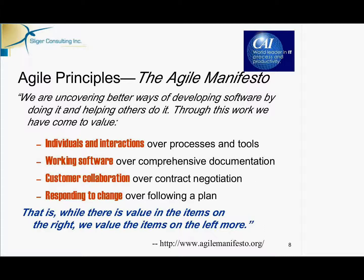They laid out their value system in this manifesto and in an associated set of principles. The manifesto is really just a common sense approach to the creation and delivery of software products. They state that they are uncovering better ways of developing software by doing it and helping others do it. Through this work they came to value four things: individuals and interactions over processes and tools; working software over comprehensive documentation; customer collaboration over contract negotiation; and responding to change over following a plan. While there is value in the items on the right, they value the items on the left more.